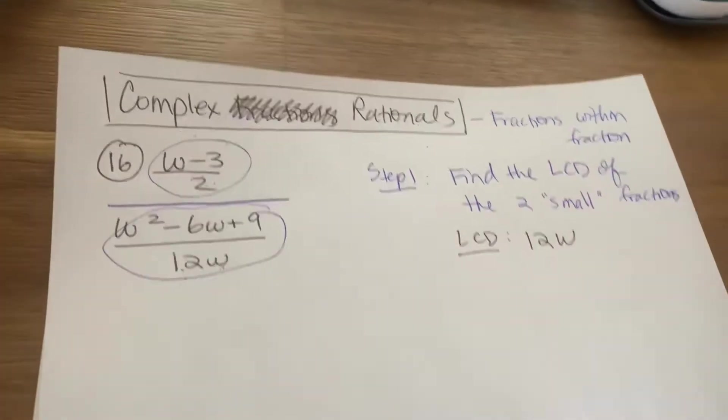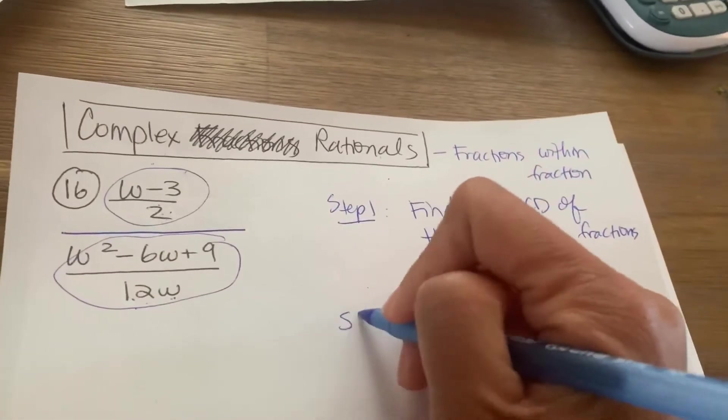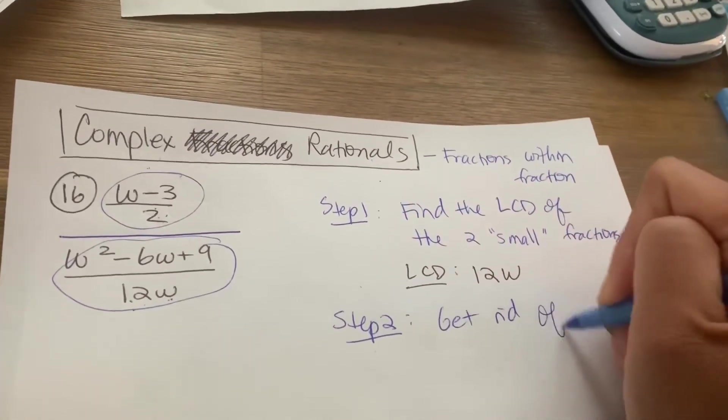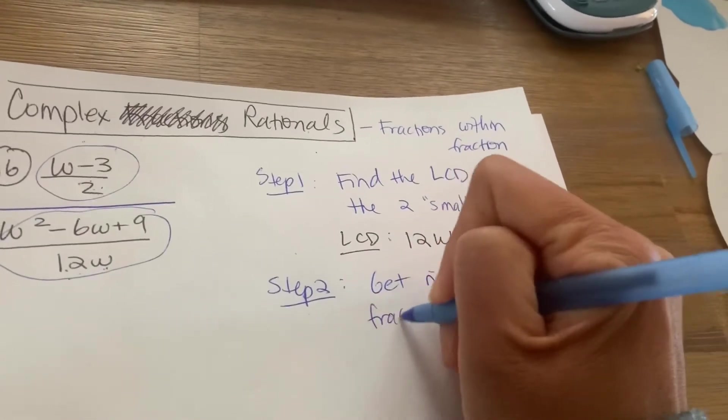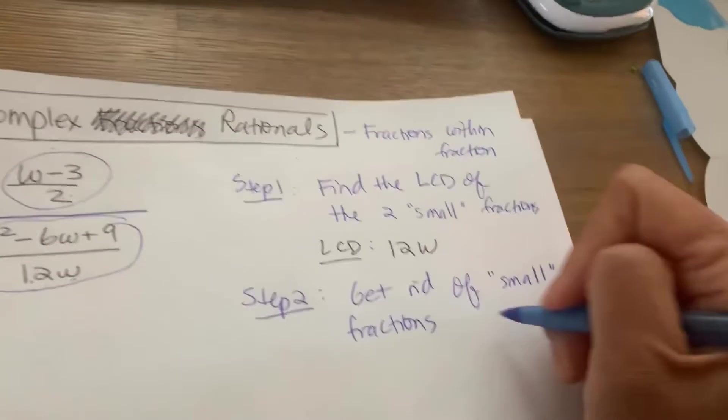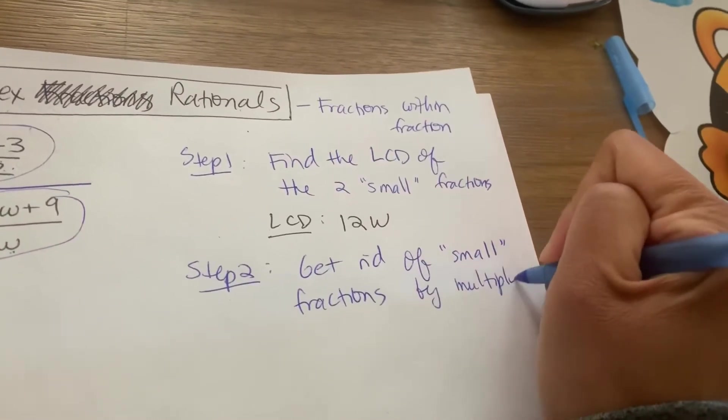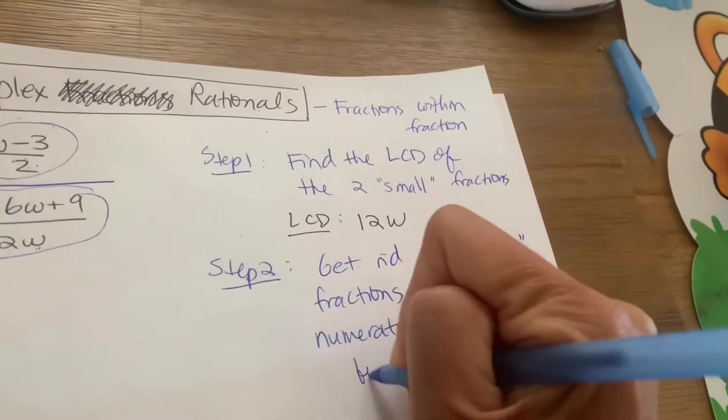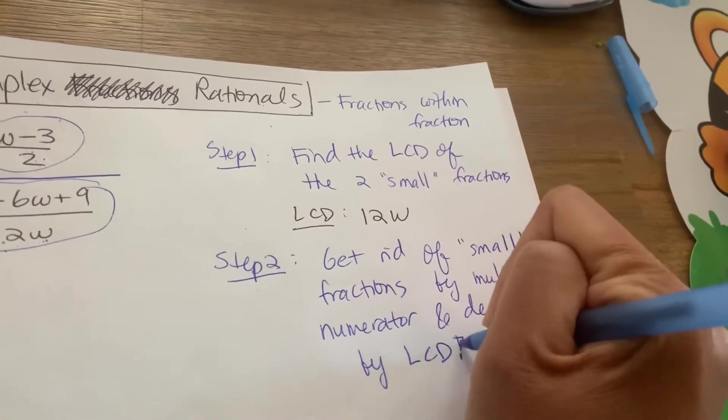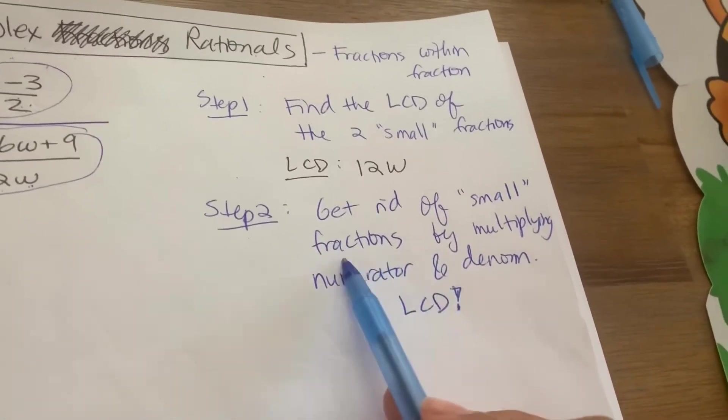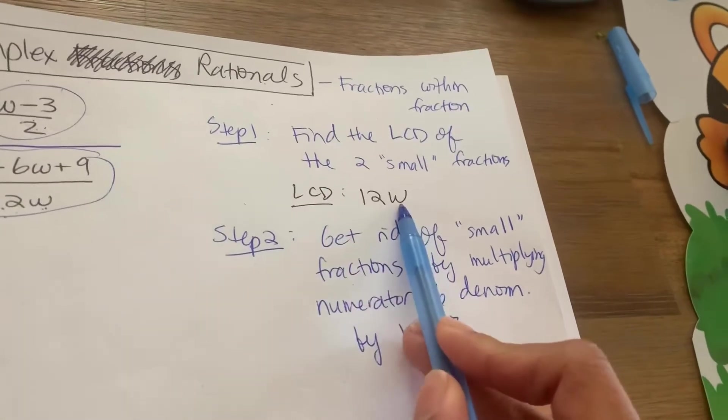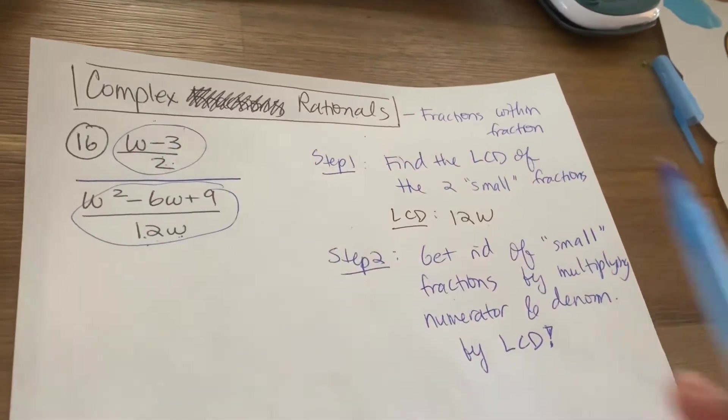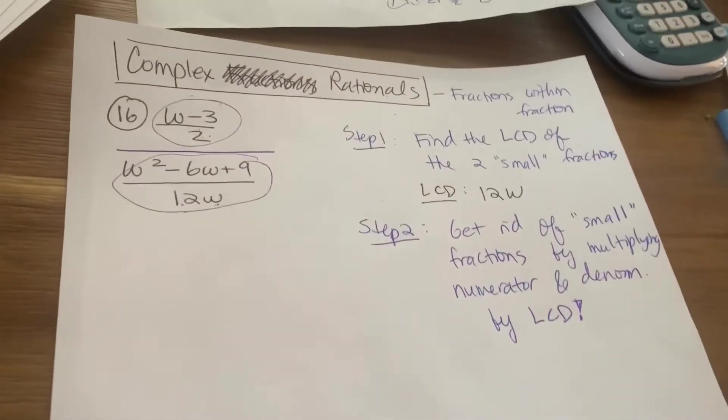So what are we going to do with this LCD? So just like when we deal with equations, which we will be doing next, we are going to use the LCD and we're going to get rid of quote unquote small fractions. So you want to get rid of the small looking fractions by multiplying the numerator or the top and the denominator or the bottom by the LCD. I hope that sounds familiar to you because when we were dealing with equations, in order to get rid of fractions in equation, we multiply the equation by the LCD. In this case, since it's not an equation, but there's just one big fraction here, we're going to multiply the top and the bottom by the LCD to get rid of the small fractions. So let's see how that looks like.